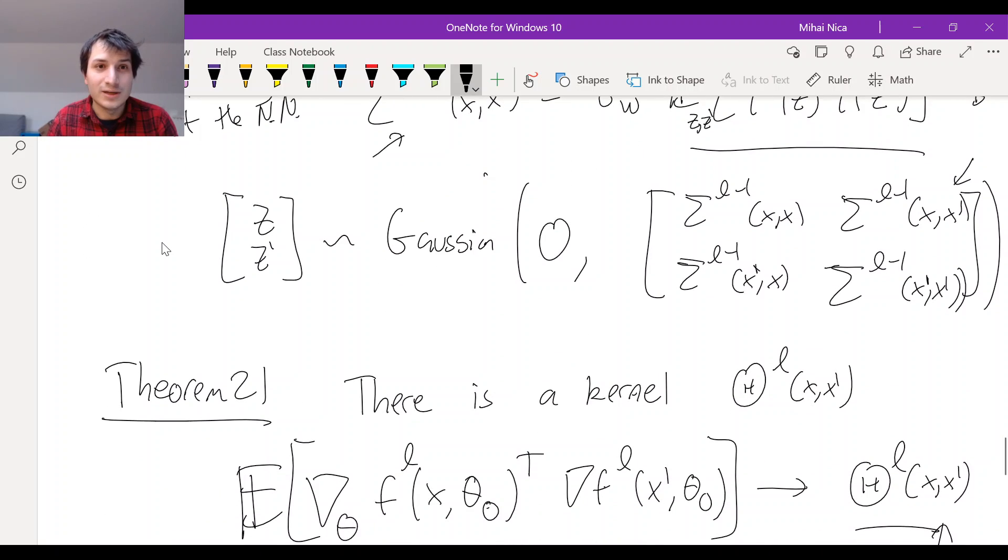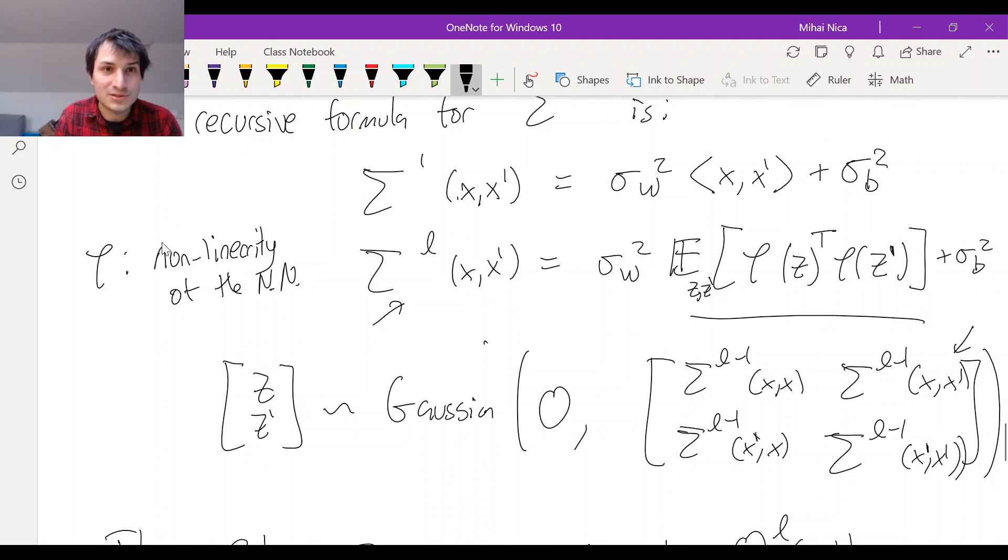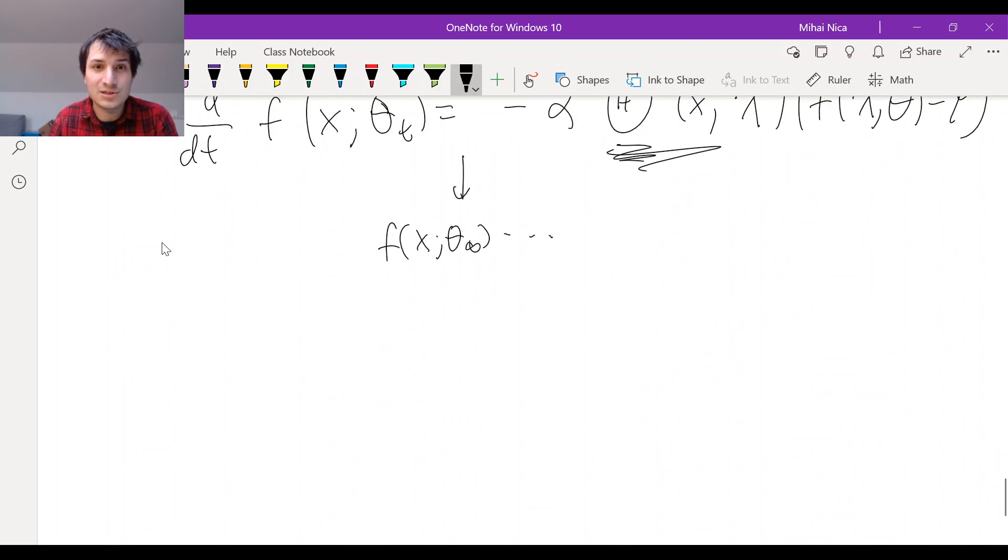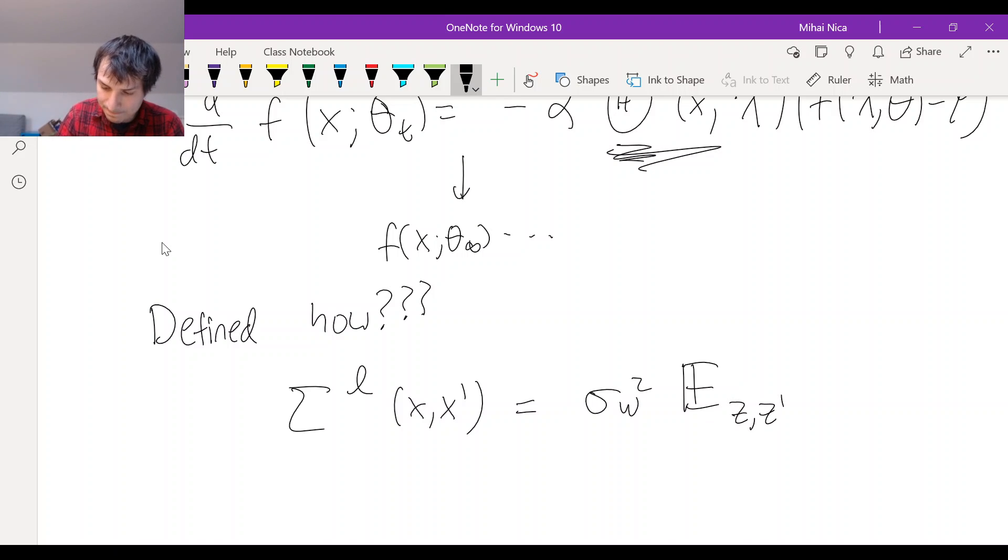So in the NNGP kernel, you had to have these two variables, z and z prime, and you did some expected value of the non-linearity. So to define the neural tangent kernel, you need this, and you need the same thing with the derivative of the non-linearity. And the answer is you need two kernels. So you need the NNGP kernels from before, sigma L of x, x prime. So this was defined to be this definition, expected value over z, z prime, phi of z times phi of z prime, plus sigma b squared. That was the definition of the NNGP kernel, sigma L.